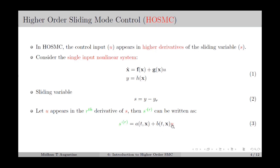By properly selecting the control input U, we can make the sliding variable S equal to 0. In other words, we can make Y equal to Yr, where Yr is the reference output. In higher order sliding mode control, we consider the value of R as greater than or equal to 2. This results in schemes like second order sliding mode control, third order sliding mode control, and so on.